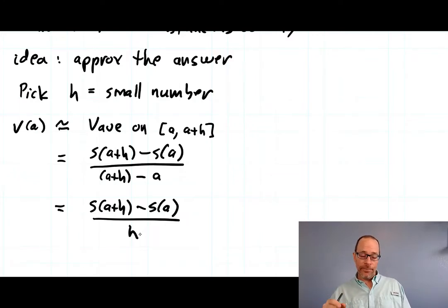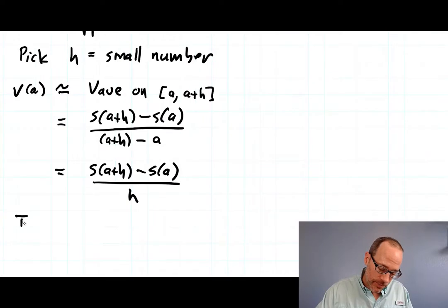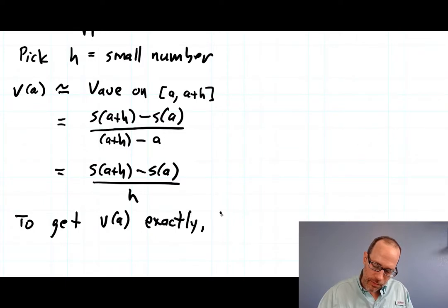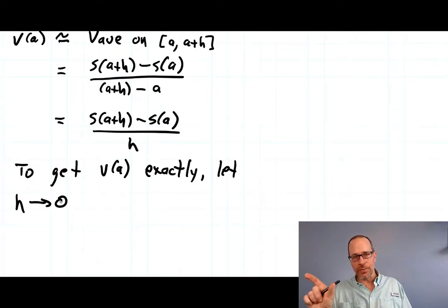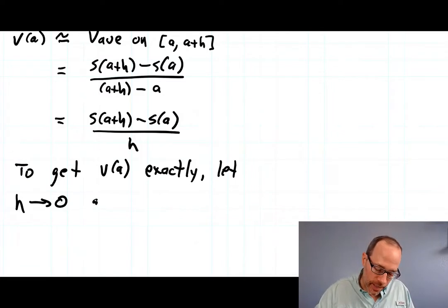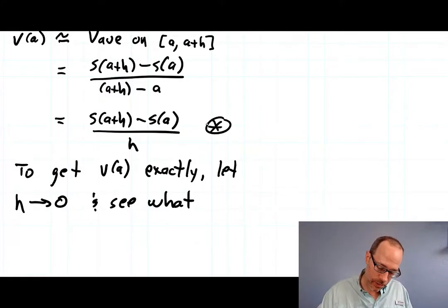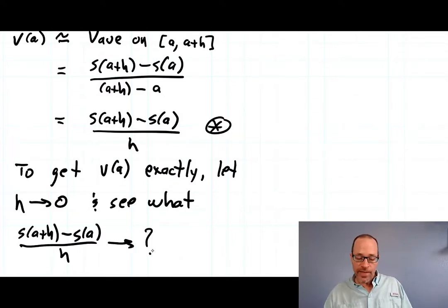And so we come up with this idea that to get the exact answer, what we're going to do is let h get smaller and smaller. So I'm going to write it with this notation. Let h head towards zero. Pick smaller and smaller h's heading towards zero. And then see what this part over here is getting closer to. So see what s of a plus h minus s of a all over h is going to. And if I figure out what that's converging to, that'll be the exact answer. This process where you let h go to zero and then you look at this other function and see what it's approaching is called the limit.